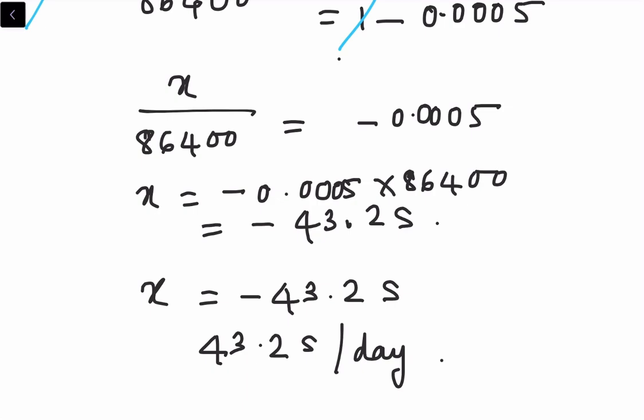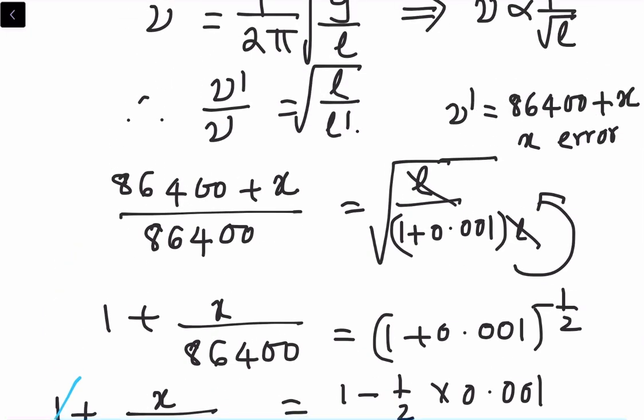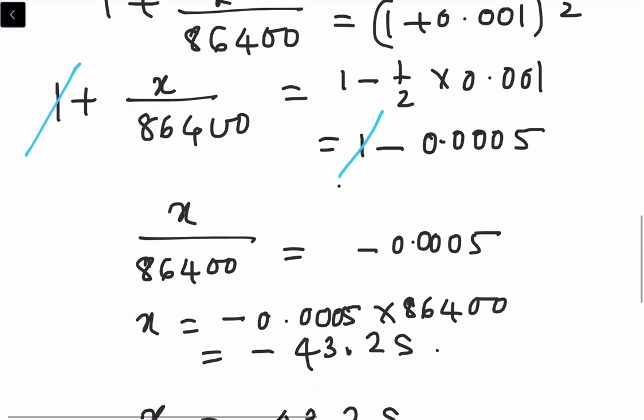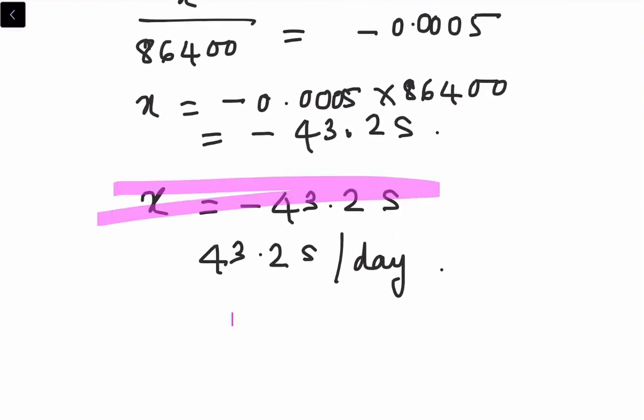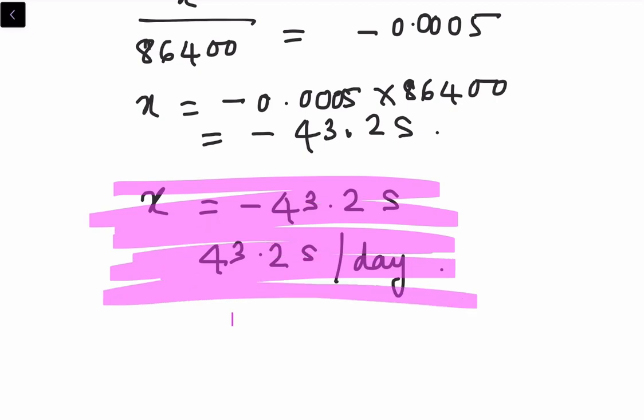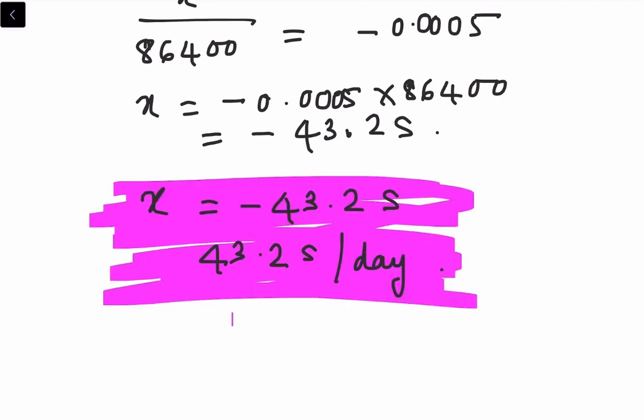Here x is the error that we have to take. When you take x as the error, as I have written here, x is nothing but error. Original time is 86,400 plus error - that gives you the new frequency or new number of seconds per day, which is equal to nu dash. Therefore finally we have come to the conclusion: x is equal to 43.2 seconds per day. So that is the answer. Thank you for watching. We will meet in the next video with some other numerical. God bless you all.